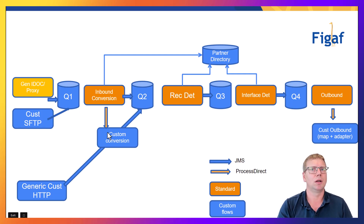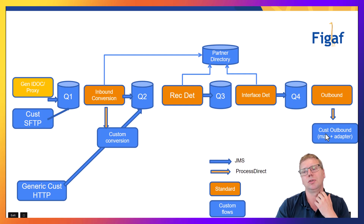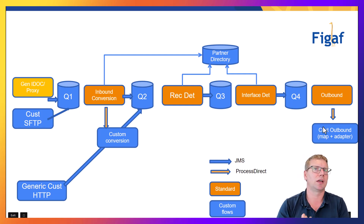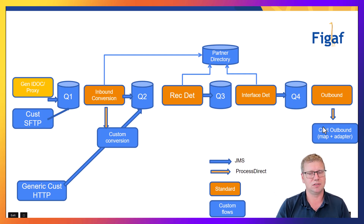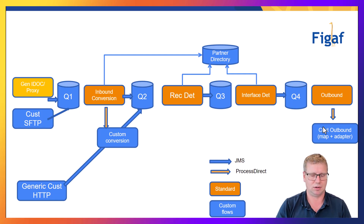There is also a part of this that enables you to skip these two steps if you know this is a one-to-one message processing - you can configure a skip that goes directly to the outbound queue. In this outbound queue we are then using a process direct to pick up the messages and handle them, making it a lot easier for you to handle these scenarios.